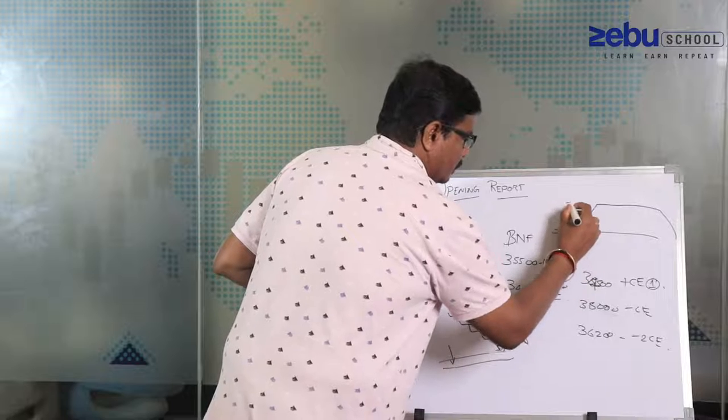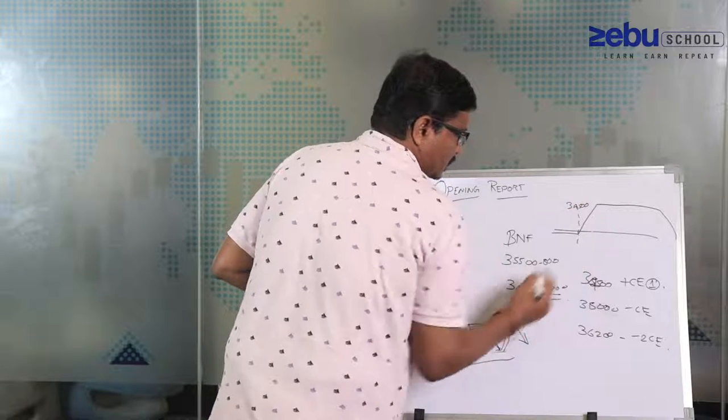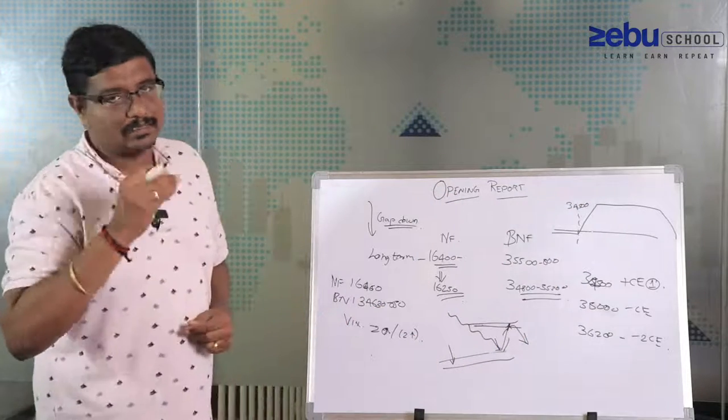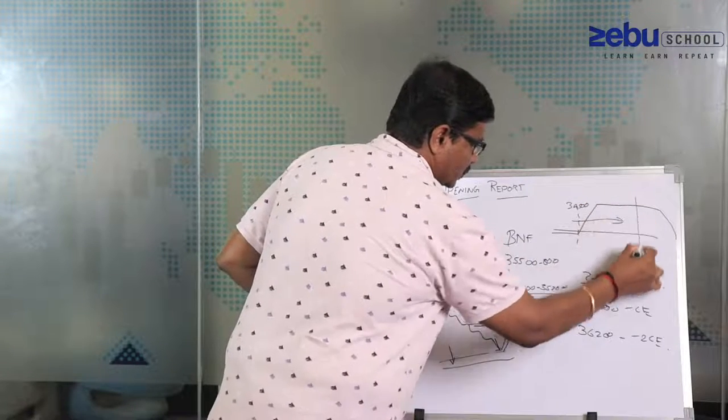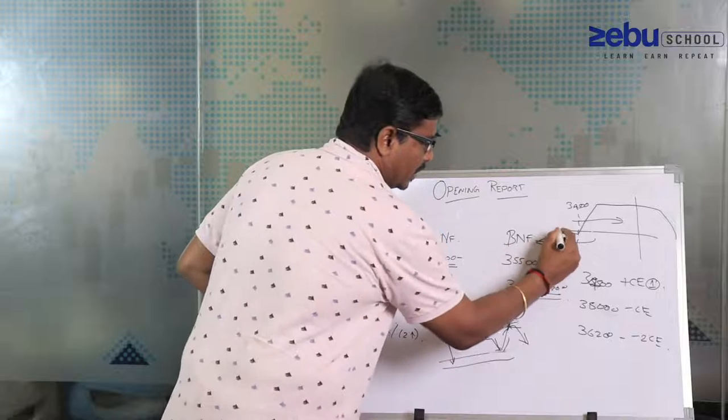This right now at 34,500. What I am expecting is a small bounce. If at all the bounce is coming, I am going to make profit in the zone. If not, my view is weak and I have a very small risk.